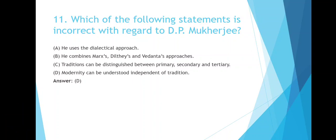Option C: Traditions can be distinguished between primary, secondary and tertiary. Option D: Modernity can be understood independent of tradition. The right answer is Option D — modernity can be understood independent of tradition.